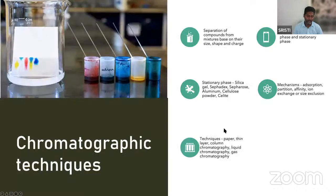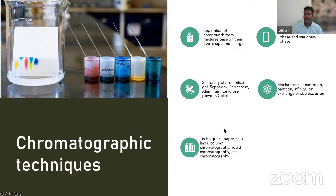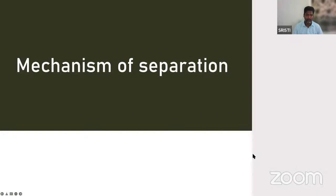Now we look at chromatographic techniques — how to separate components based on shape, size, and charges. This generally involves the use of a mobile phase and a stationary phase. The stationary phase is normally silica gel, Sephadex, Sepharose, aluminium, cellulose powder, or saline. The mechanisms followed include adsorption, partition, affinity, ion exchange, or size exclusion. Techniques include paper chromatography, thin layer chromatography, column chromatography, liquid chromatography, and gas chromatography.